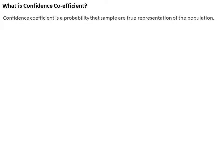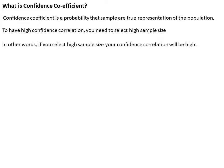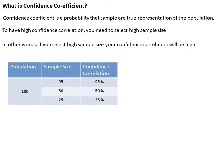An important sampling topic: the confidence coefficient is the probability that samples are representative of the population. To have a high confidence coefficient, we need to select a high sample size. For example, if my population is 100 and my sample size is 90, it will give me a confidence of 95%. On the other hand, if I select only 25 as the sample size, my confidence will be lower — only 25%. So higher the sample size, higher the confidence.